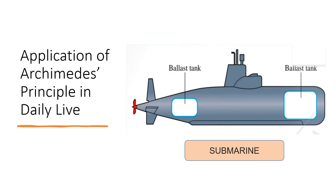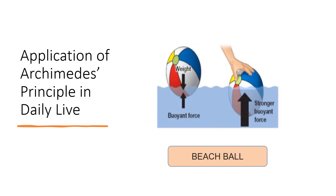Now let's take a look at the second application of Archimedes' Principle. The second one is the beach ball. Beach balls are filled with air only, so they have a very small weight. Hence, they do not displace much water. Since they displace less water, the buoyant force acting on them is also very small. But when we try to push the ball into the water, the buoyant force acting on it increases, which does not let the beach ball sink, and it floats on the water surface.